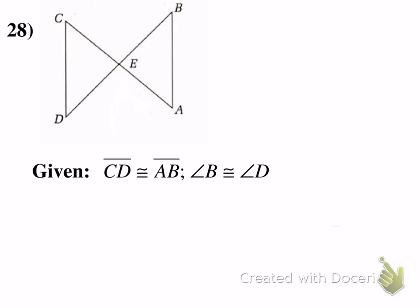So we need three things. What have they told us? The first thing they've told us is line segment CD is congruent to line segment AB. So I'm going to go ahead and mark that on my diagram. And that's these two line segments here, CD congruent to AB, and I mark that with those little hash marks.